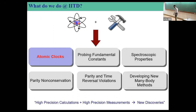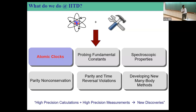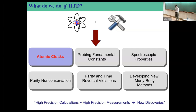The strategy of our work is that we choose an appropriate atom or ion based on experimental inputs, and then we apply appropriate many-body methods. Some of the implications we look at at IIT Delhi: we work on atomic clocks, which is the context of today's presentation. Atomic clocks can be important probes of variation in fundamental constants, because astronomical measurements suggest that alpha varies by maybe one part in 10^16, which is essentially the accuracy of most atomic clocks.